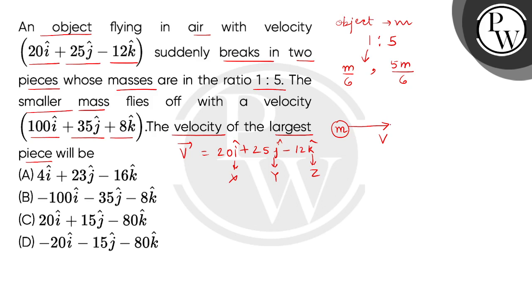Now this piece, when it breaks in two fragments, which we consider the first mass m by 6 with velocity v1, and the second mass 5m by 6 with velocity v2. We can see that this is the largest mass and this is the smaller mass. We need to find v2, and we have v1's value given as the smaller mass velocity 100i cap plus 35j cap plus 8k cap.